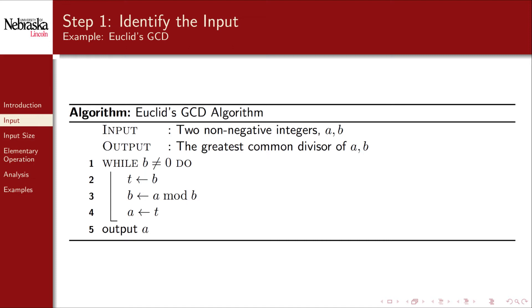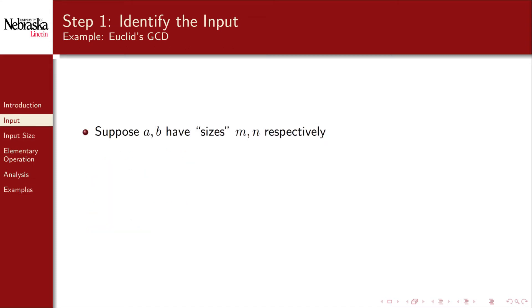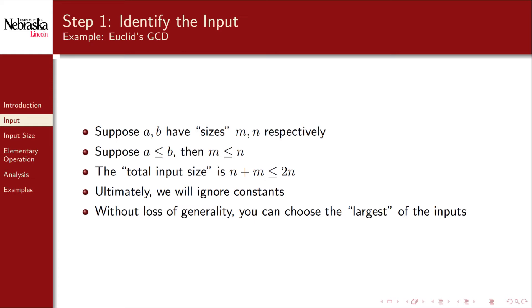Another example would be Euclid's GCD algorithm. Here there are two inputs but they're the same type of input, two integers. Without loss of generality we can simplify the analysis by analyzing the algorithm with respect to the larger of the two inputs. To see why this is, suppose that we have two inputs of sizes N and M respectively. Further, suppose that B is the larger of the two. Then necessarily the size is also larger. Then the total input size can be bounded by twice the largest. Ultimately when we get to step 5 and provide an asymptotic analysis, we'll ignore constants like this. So without loss of generality we can focus on the larger of the inputs.